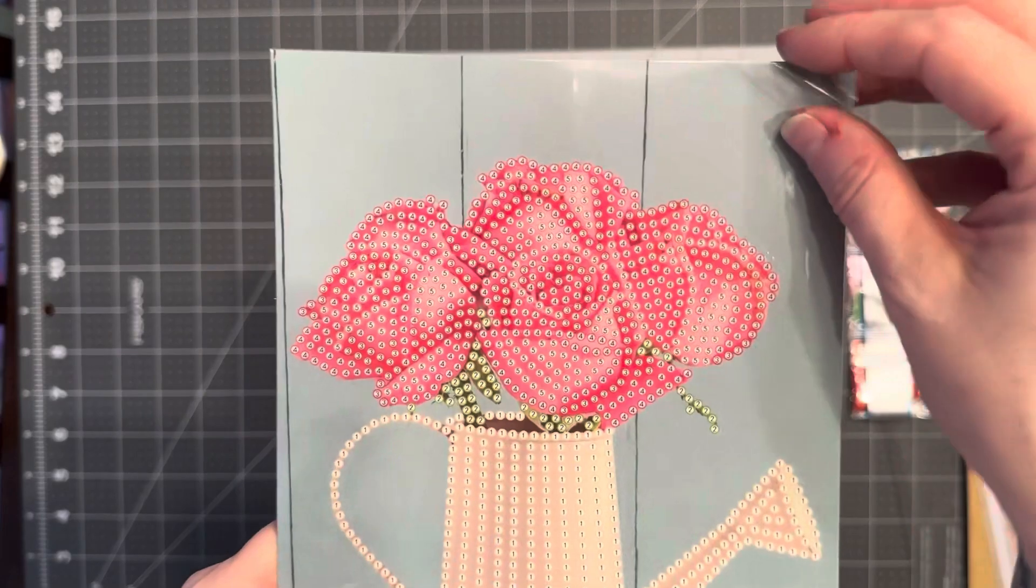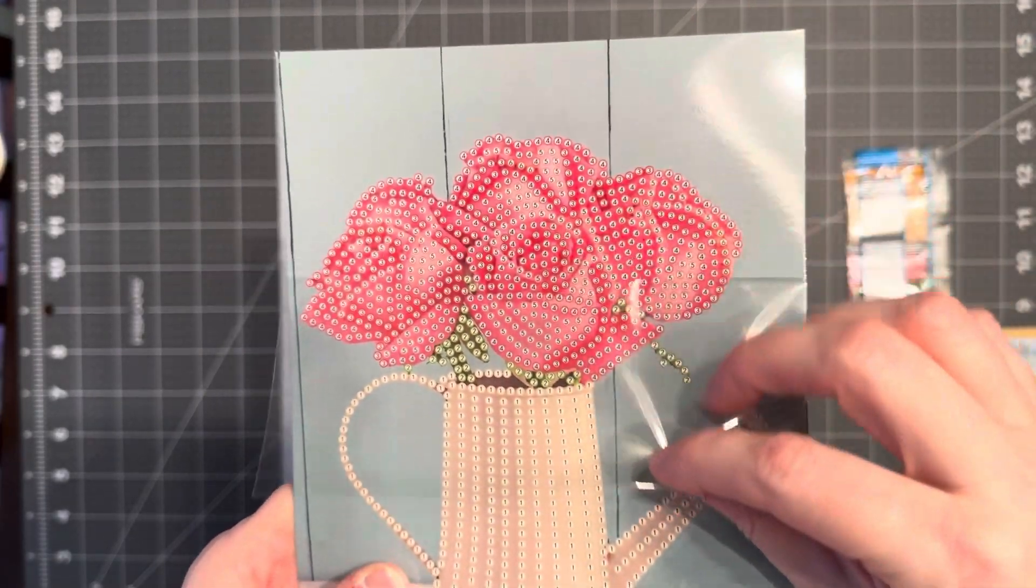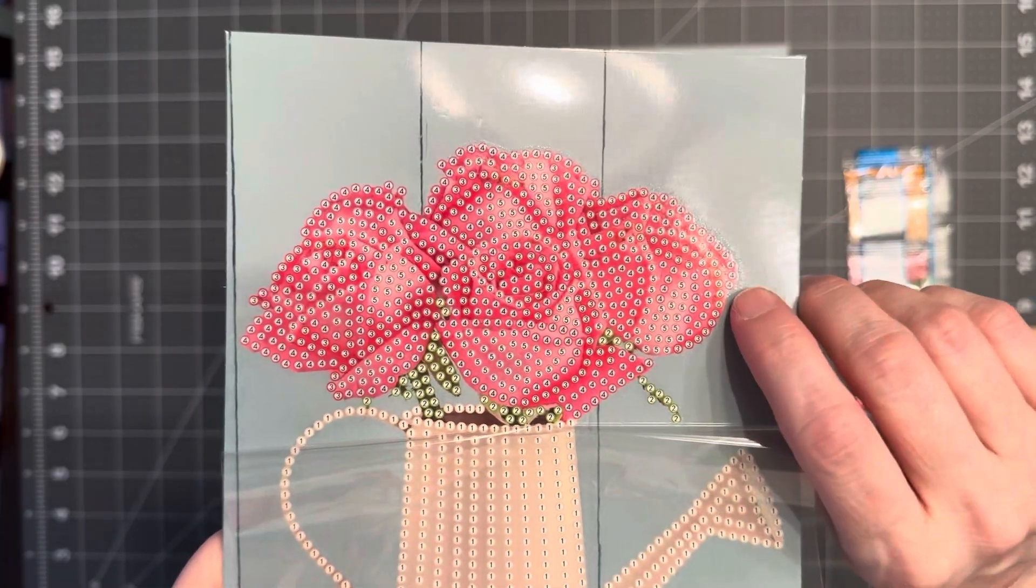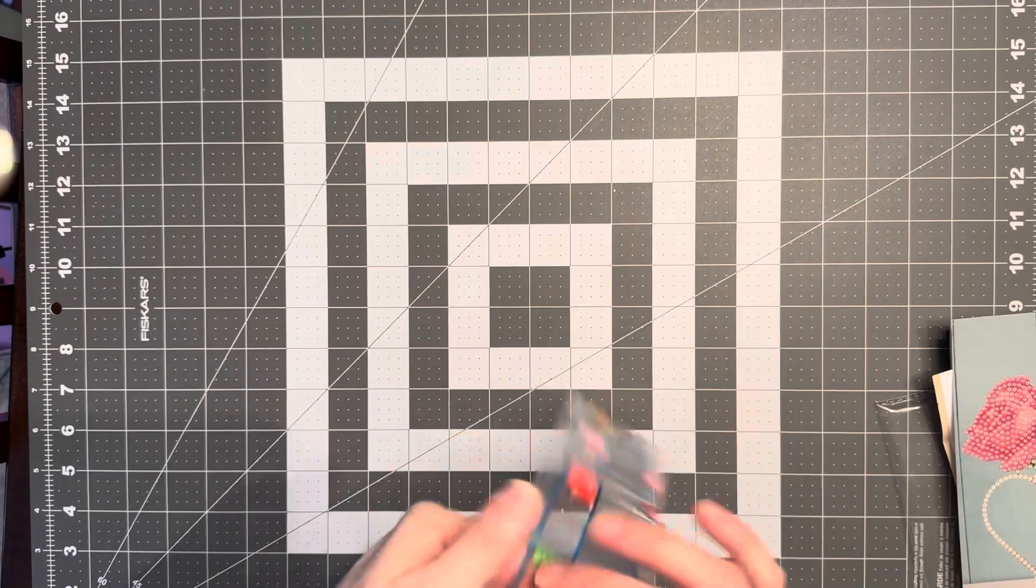Here is the tool kit, tray, wax, and pen. The diamond painting sheet. So the only part that's sticky on the sheet will be where you're going to place the drills. And the drills, which I'll show you right now.